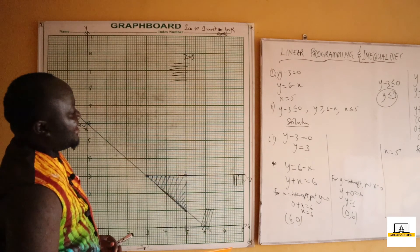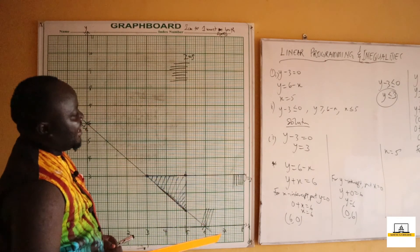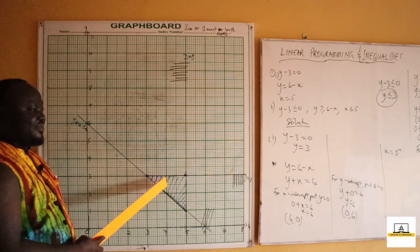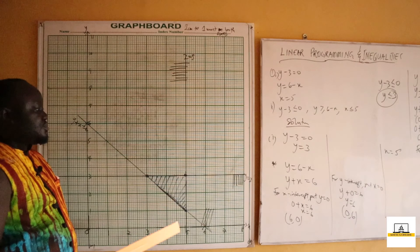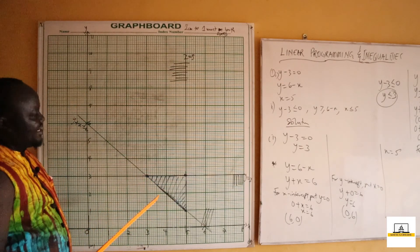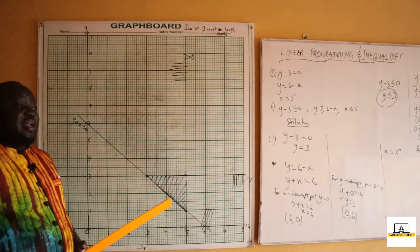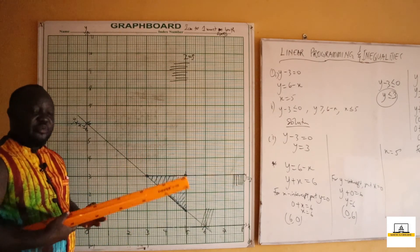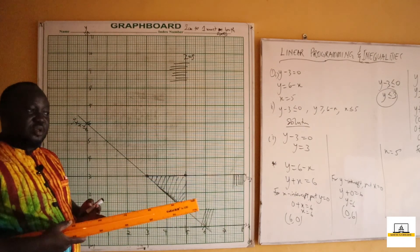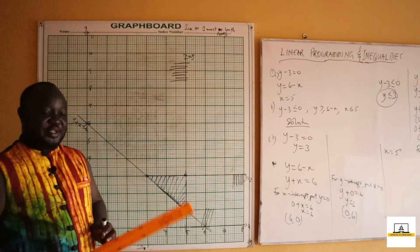So this is the region that satisfies y minus 3 less than or equal to 0, y greater than 6 minus x, and x less than or equal to 5. Next, we will solve another example and use it to find the maximum or minimum value and the values of x and y at which it occurs.